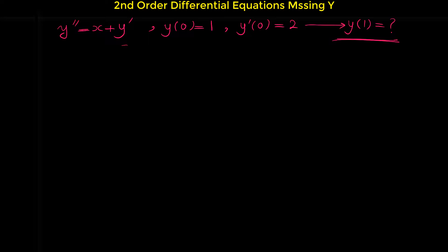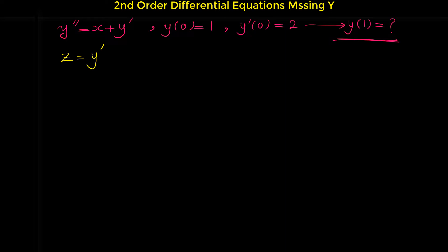How can we solve this differential equation? In this differential equation, we don't have any term involving y, so we use this substitution: we suppose z to be y prime. In this type of differential equations where we don't have any term involving y, we suppose y prime to be z, a new function — we can name it any other variable.